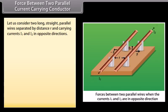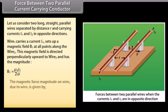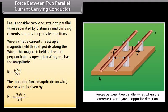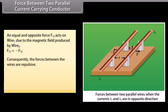Force between two parallel current carrying conductors: consider two long straight parallel wires separated by distance R, carrying currents I1 and I2 in opposite directions. Wire 1 sets up a magnetic field B1 = μ₀I1 / (2πR) at wire 2, directed perpendicularly. The magnetic force magnitude on wire 2 due to wire 1 is μ₀I1I2L / (2πR). An equal and opposite force F12 acts on wire 1. Consequently, the forces between the wires are repulsive.